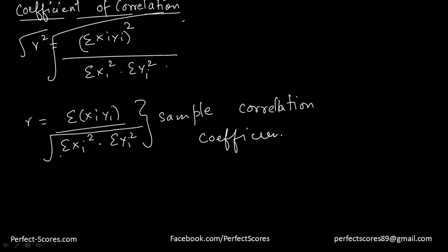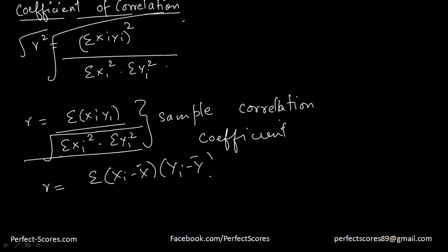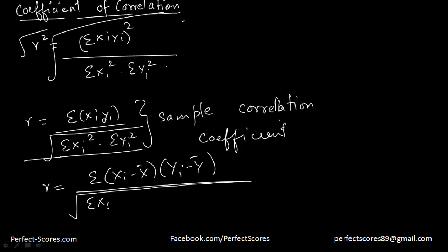There are a few properties of this coefficient. If we expand the value of r, it is equal to the summation of xi — that is Xi minus x-bar — into yi, which is Yi minus y-bar. As you already know, these are small x and small y, which are the deviations, divided by the square root of the summation of xi minus x-bar whole square into summation of yi minus y-bar whole square. So this is what we have as the coefficient of correlation.